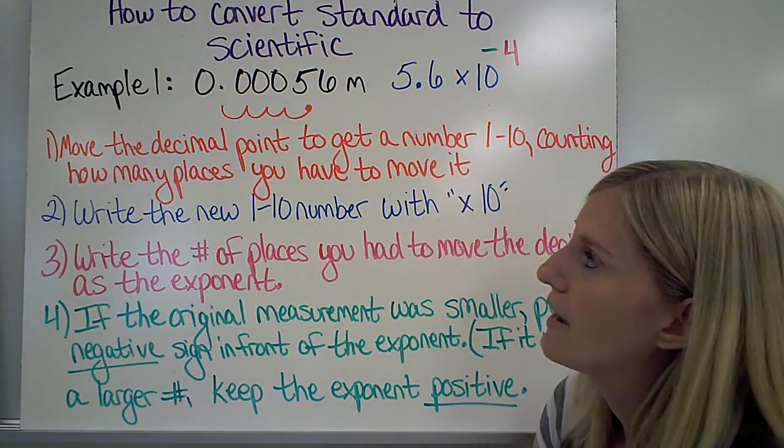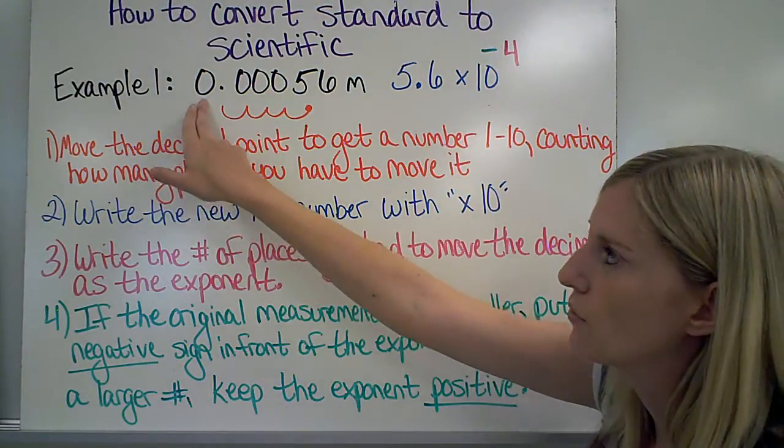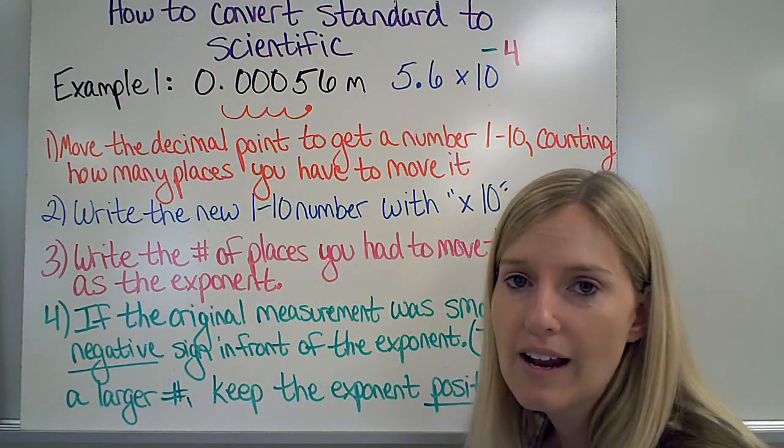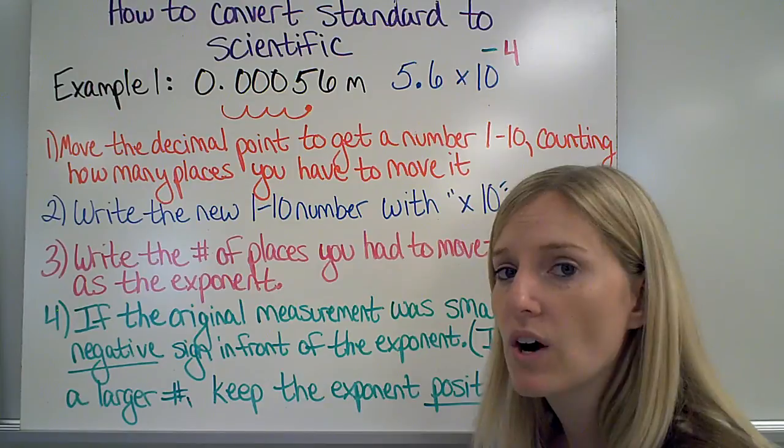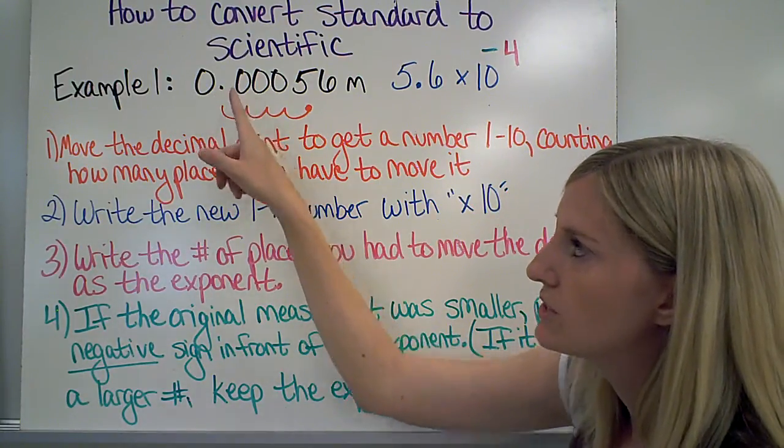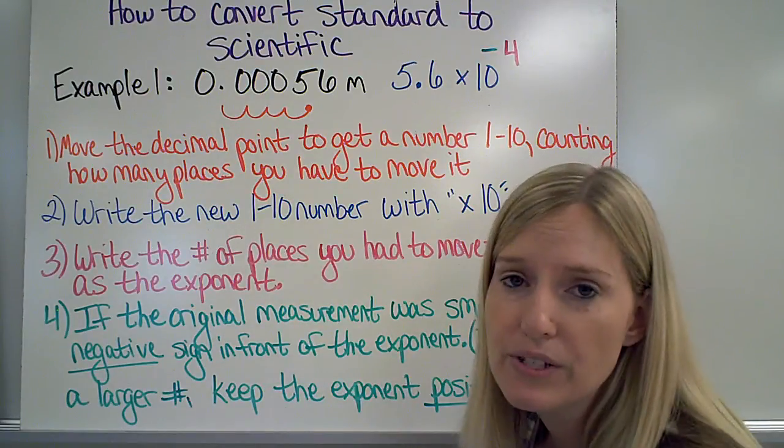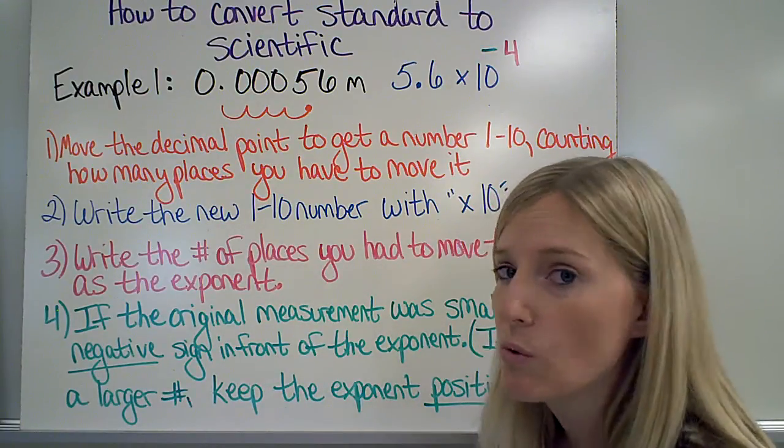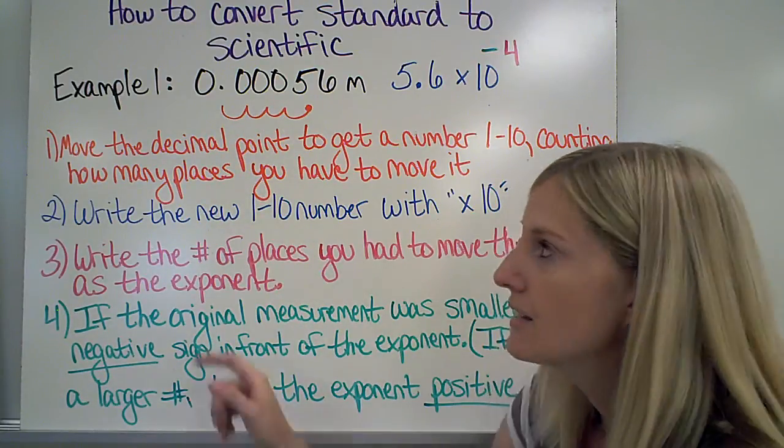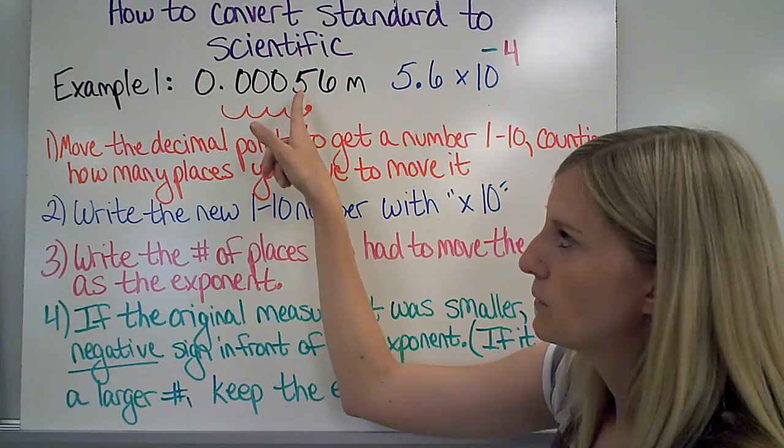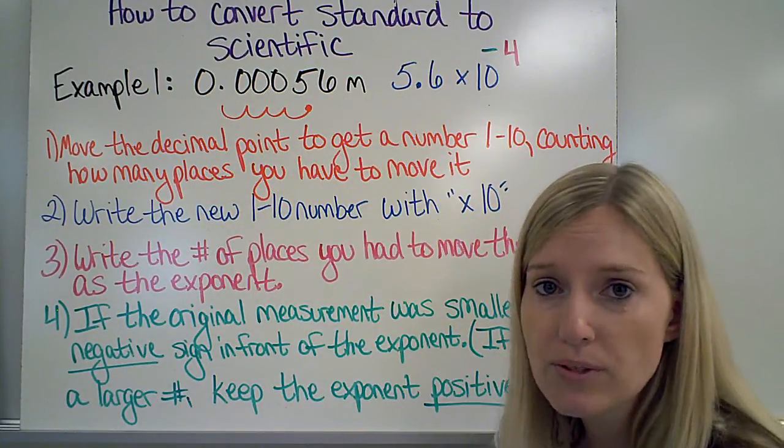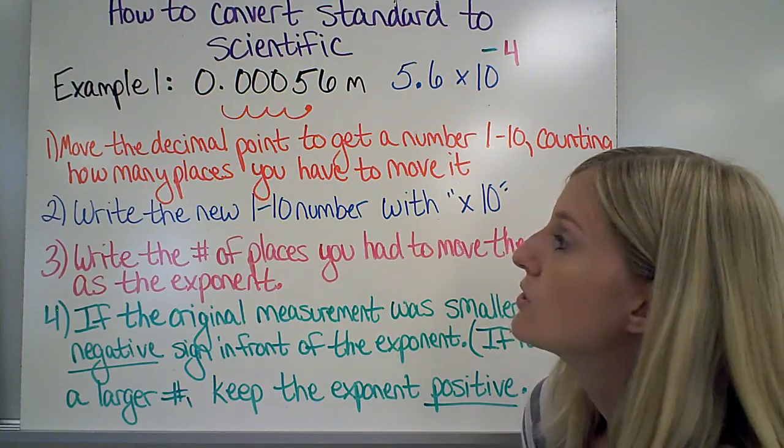So, to do this, I'm going to take my normal number, and the first thing I'm going to do is move the decimal point to a place where now I'm going to have a number between 1 and 10. So if I move this decimal point one place this way, I would still have 0.0056. That's not between 1 and 10. So I have to keep moving it until I reach a number between 1 and 10. In this case, I keep moving it until I get between the 5 and the 6. That gives me 5.6 as my 1 through 10 number. So, that's my first step.